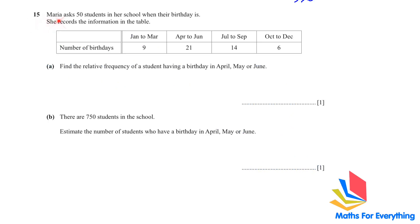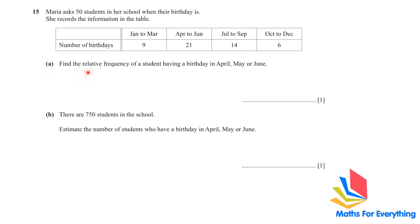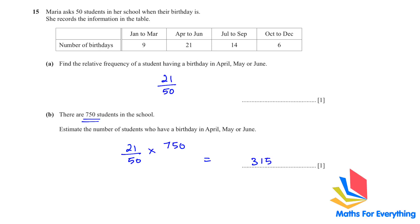Question 15: Maria asked 50 students when their birthday is and recorded results in a table. Find the relative frequency of a student having a birthday in April, May, or June. There are 21 students with birthdays in that period, so the relative frequency is 21/50. There are 750 students in the school — to estimate the number with birthdays in April, May, or June, multiply the relative frequency by 750: (21/50) × 750 = 315 students.